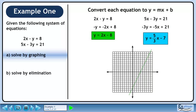The green line is y equals 2x minus 8. The blue line is y equals 5 over 3x minus 7. The point of intersection is at 3 minus 2.